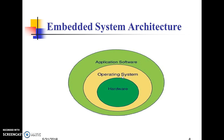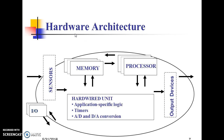The Hardware Architecture of an Embedded System includes sensors as input, Memory, Processors, Output Devices, Input-Output Devices, Hardwired Units, Application-Specific Logic, Timers, and Analog-to-Digital (A-to-D) and Digital-to-Analog (D-to-A) conversion.